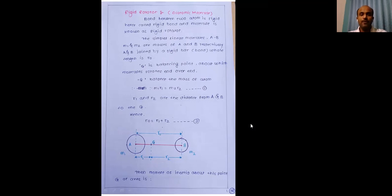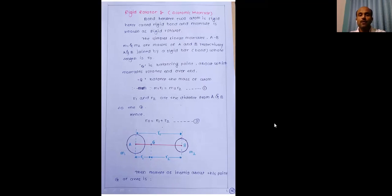Welcome, dear learners. In continuation to our previous video on spectroscopy, in this video we are going to discuss the rotational energy of a rigid diatomic molecule. In the microwave region, when a molecule is exposed to microwave radiation, it shows rotation. The term 'rigid' is used because the chemical bond between two atoms is considered as a rigid bond.